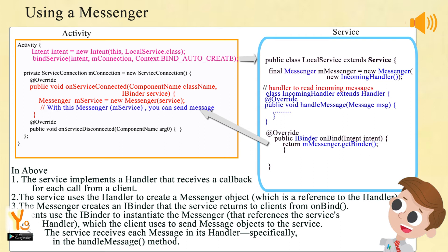Fourth, clients use the IBinder to instantiate the Messenger that references the service's Handler, which the client uses to send Message objects to the service. And last, the service receives each message in its Handler, specifically in the handleMessage method.